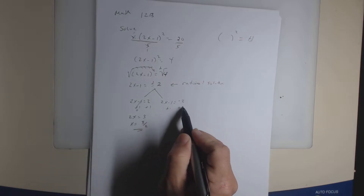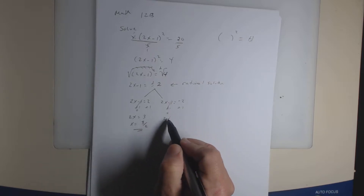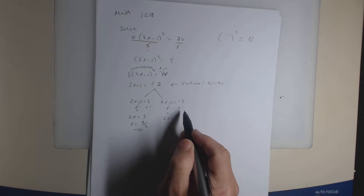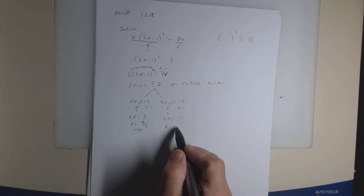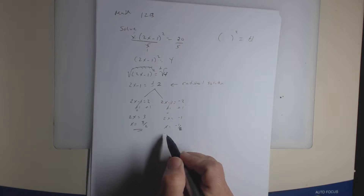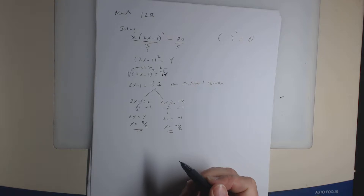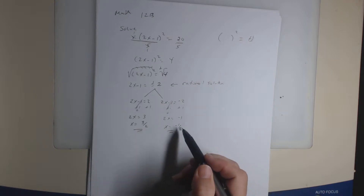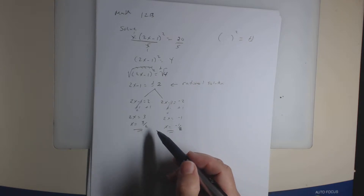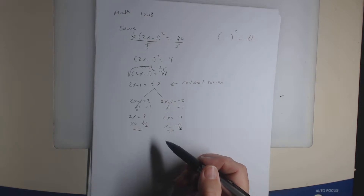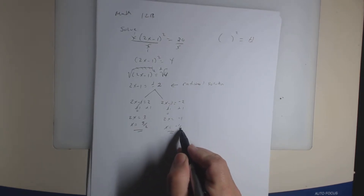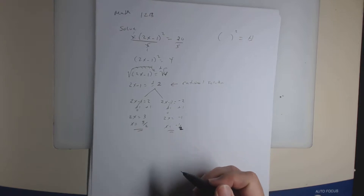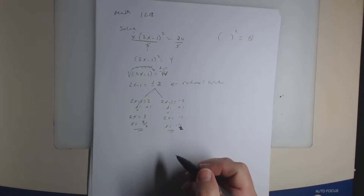Over here, add 1 to both sides, combine like terms. I get 2x equal negative 2 plus 1, which is negative 1. So x equals negative 1 half. Divide both sides by 2, you get negative 1 half. So those are your two solutions. These are rational numbers — 3/2 is a rational number and negative 1/2 is a rational number.